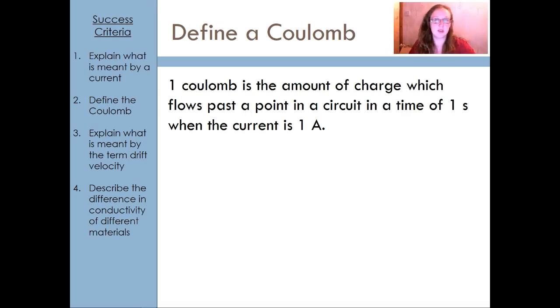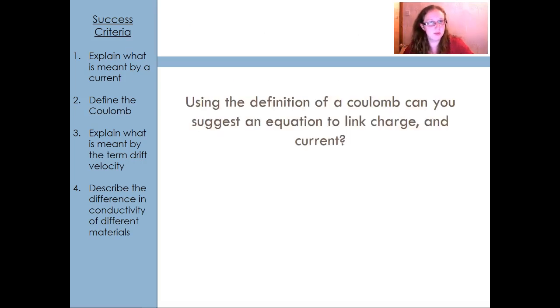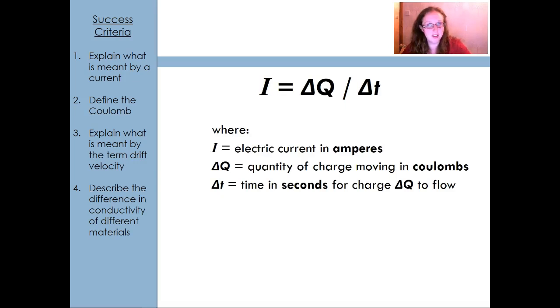So the next thing I want to just check is that we've got the definition for a Coulomb. One Coulomb is the amount of charge which flows past a point in a circuit at a time of one second when the current is one amp. So it's pretty easy one to remember. And hopefully from that definition you should actually be able to realize that there is an equation behind it. So this is a good opportunity to pause the video have a think what is the equation behind that definition. Okay so hopefully from that you could have gotten that I the current equals delta Q over delta T or one of the arrangements of that. So I is going to be in amps, Q is the amount of charge which is in Coulombs and T is the amount of time in seconds that it is flowing for.